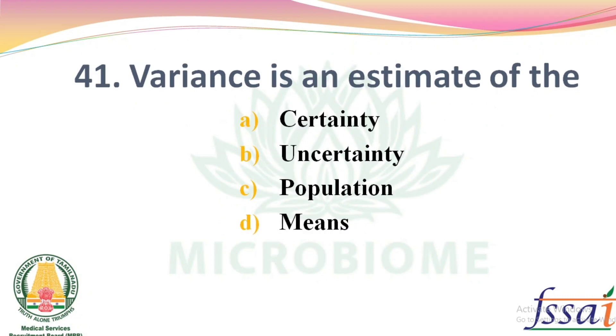Variance is an estimate of the — Options: Certainty, Uncertainty, Population, Means. The right answer: Option B, Uncertainty.